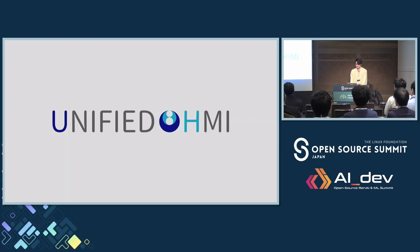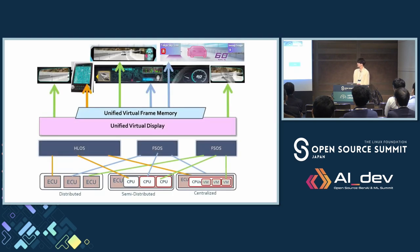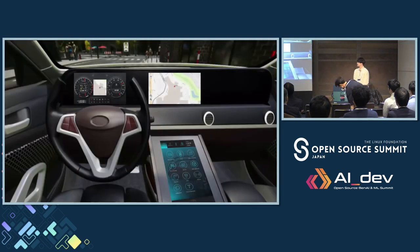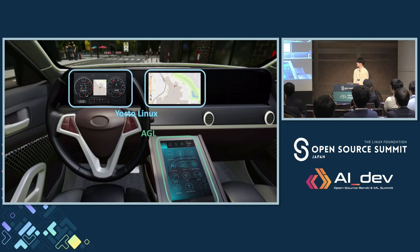Unified HMI is an open-source display virtualization technology developed by Panasonic. In this demo, we will show how unified HMI enables designing and developing an entire cockpit UI and UX efficiently across multiple displays without dependency on hardware. Here is a cockpit UI and UX development environment that virtualizes the physical automotive environment. For example, this environment virtualizes a cockpit consisting of AGL and two Yocto Linux to evaluate the cockpit UI and UX across multiple displays.